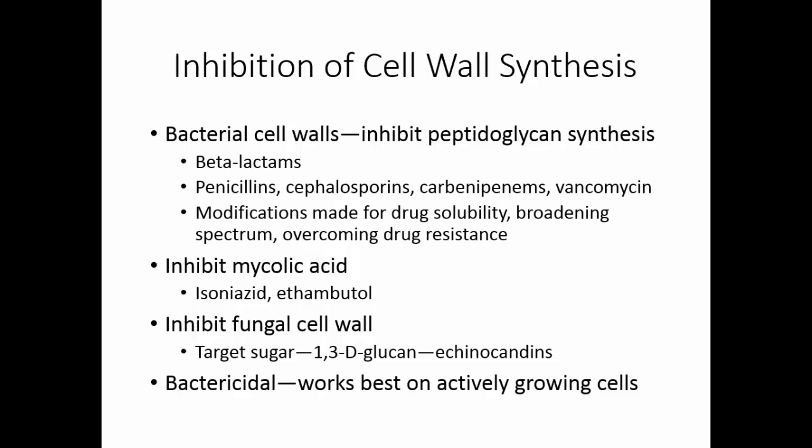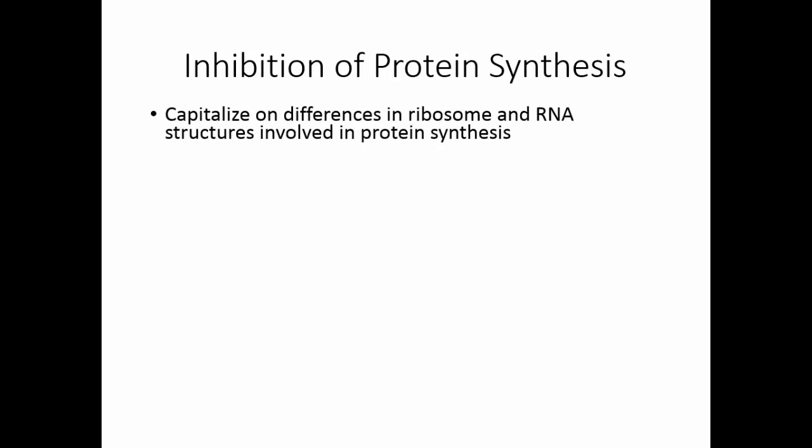All of these drugs are bactericidal — they work best on actively growing cells. When we inhibit protein synthesis, we capitalize on the differences in the ribosome and the RNA structures involved in protein synthesis. This may affect the mitochondria because mitochondria do contain prokaryotic ribosomes.